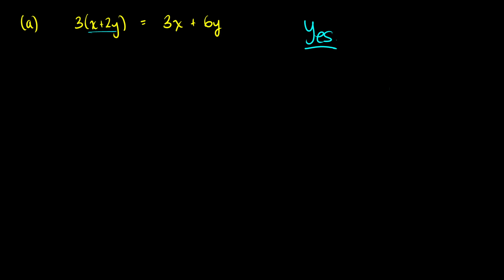We need to use the property called distributivity. Distributivity says that if I multiply a number by two things that are added together in brackets, what I can do, and I'll write this out again, 3(x + 2y), is I can take this number 3 and multiply it by x, and multiply it by 2y, and add those two things together.